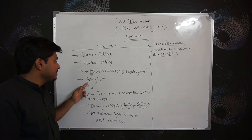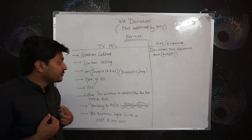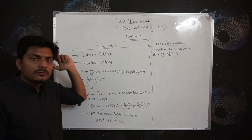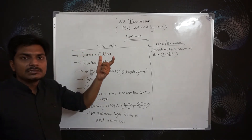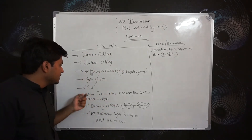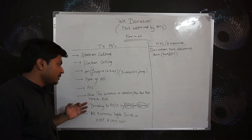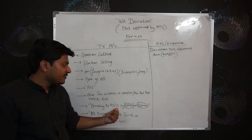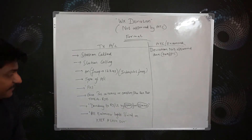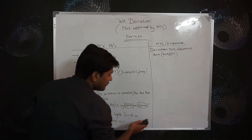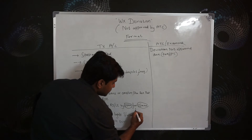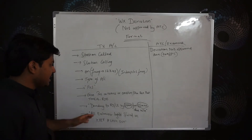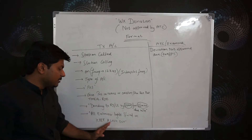You provide the type of aircraft you are flying, which is found in your flight plan. Then give your position in terms of distance in nautical miles from a position reporting point, the time, flight level, and route. You then inform the traffic that you are deviating to the right or left by ten nautical miles for fifteen minutes, and state the reason — due weather.